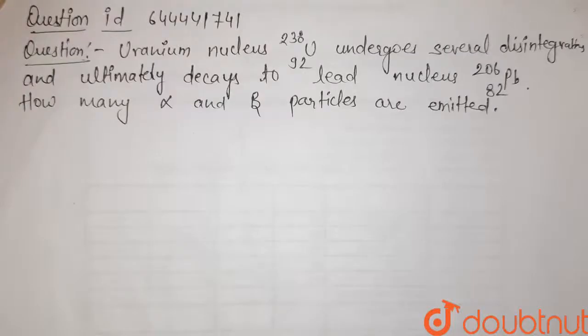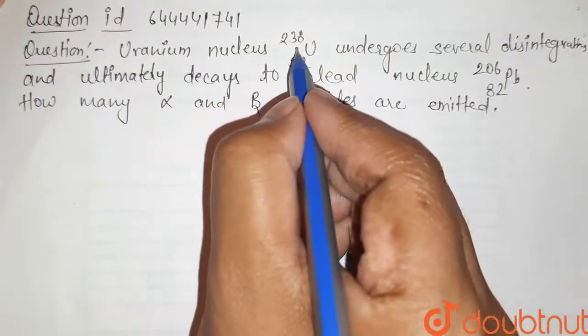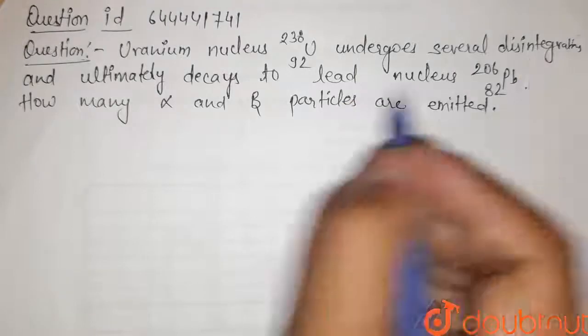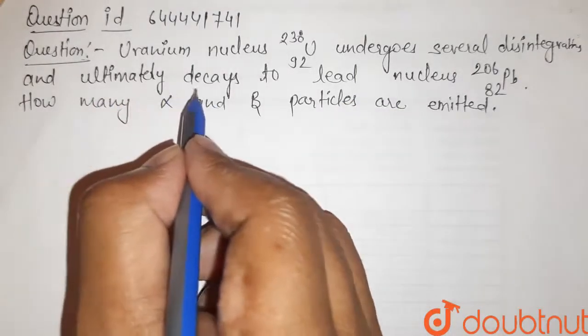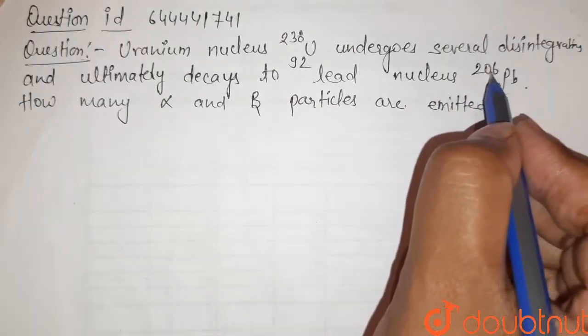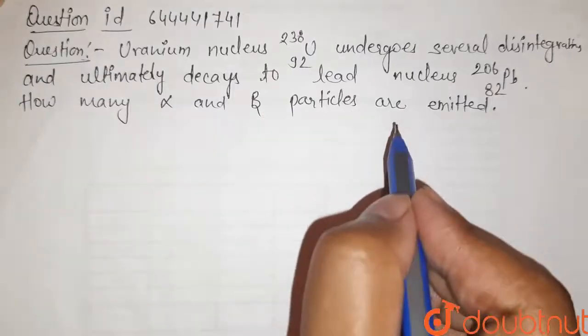Students, here is our question. Uranium nucleus U-238-92 undergoes several disintegrations and ultimately decays to lead nucleus Pb-206-82. How many alpha and beta particles are emitted?